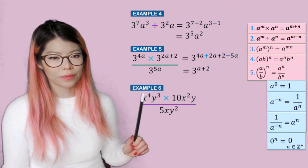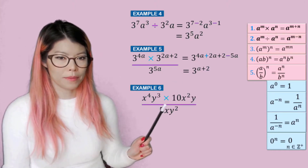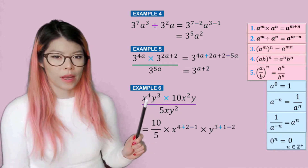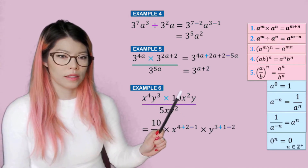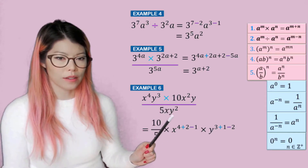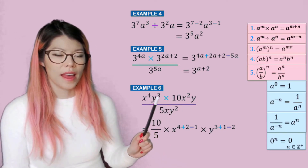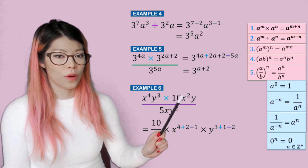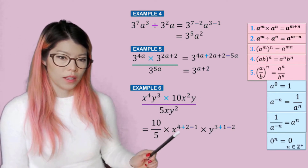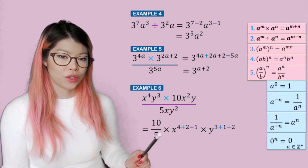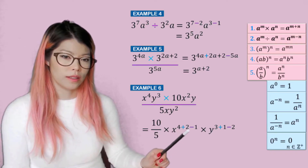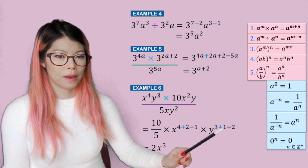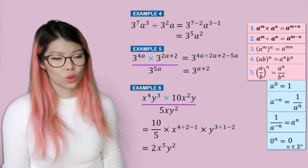Example six: again, we're going to put the numbers first in alphabetical order. So ten over five, and we have x to the four plus two minus invisible one — so four plus two minus one. And then we have y to the three plus invisible one minus two. So ten over five is just two, four plus two is six minus one is five, and three plus one is four minus two is two.